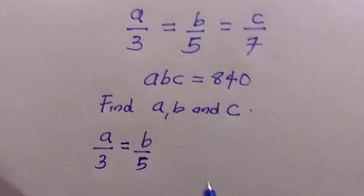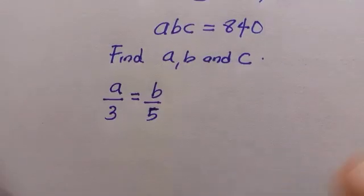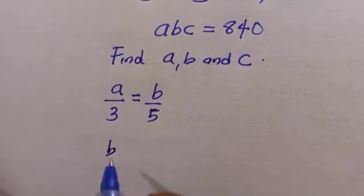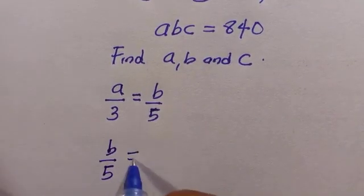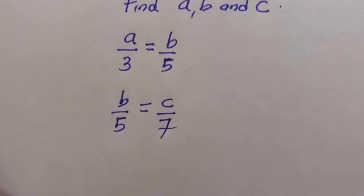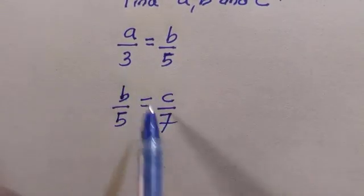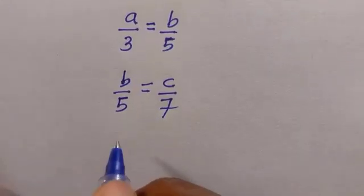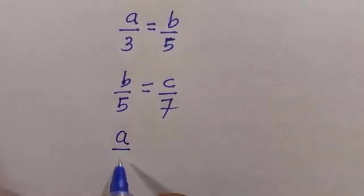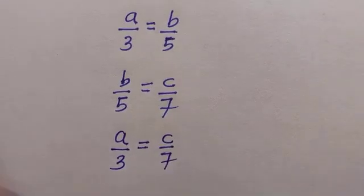And for the second one we're going to have b divided by 5 equals c divided by 7. So with these relations, if a over 3 equals b over 5 and b over 5 equals c over 7, definitely a divided by 3 equals c divided by 7.